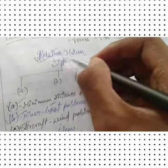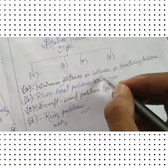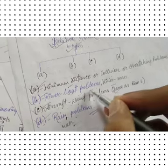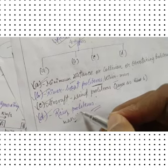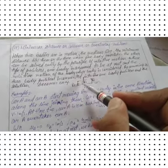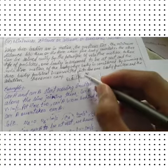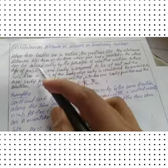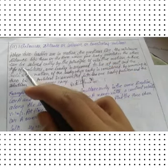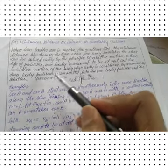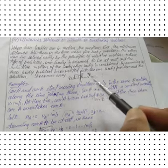There are four types of relative motion problems: first, minimum distance, collision, or overtaking problems; second, river boat problems; third, aircraft-wind problems, which are similar to the river-man problem; and fourth, the rain-man problem. In minimum distance and overtaking problems, to simplify, we assume one body is at rest and consider the relative motion of the other body.